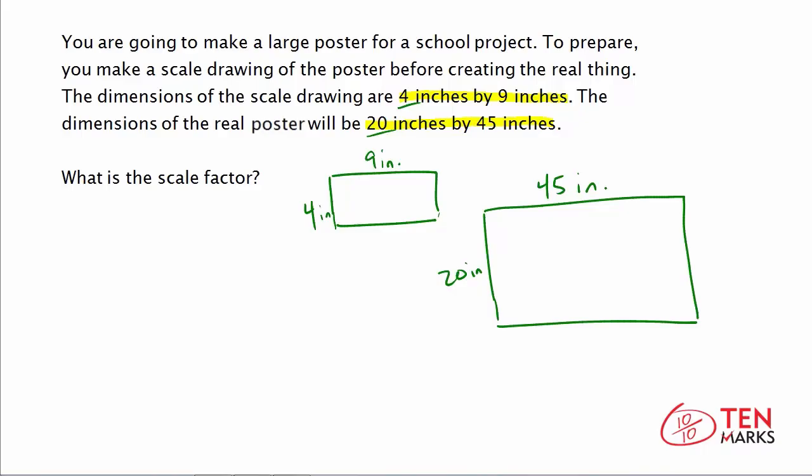So if we want to find the scale factor, we divide one of the dimensions by its corresponding side in the other object. So it would be divide one of the scale dimensions by its corresponding actual dimension. So what we're going to do is divide 4 by its corresponding side, which is 20. 4 divided by 20 simplifies to the fraction 1 fifth.